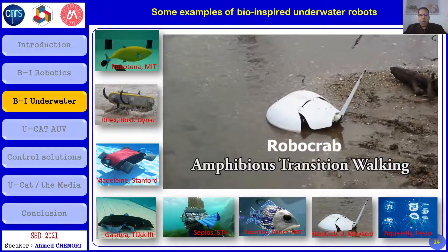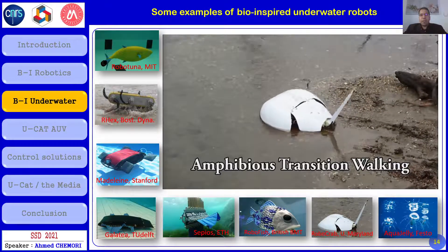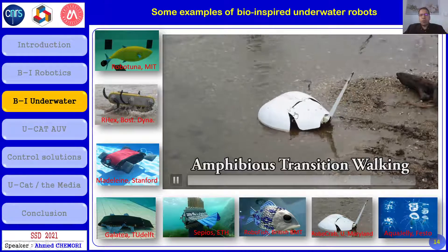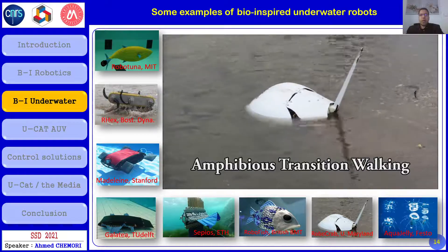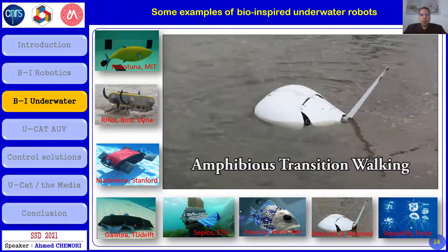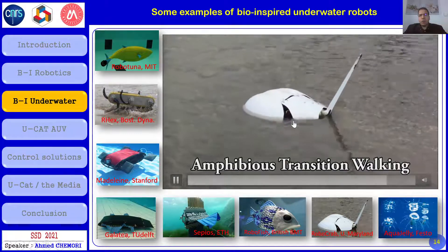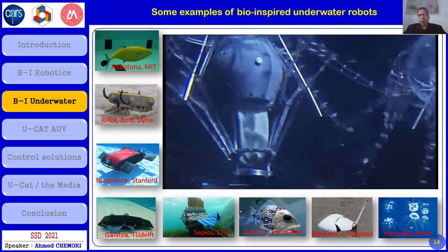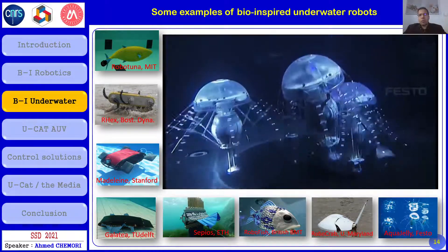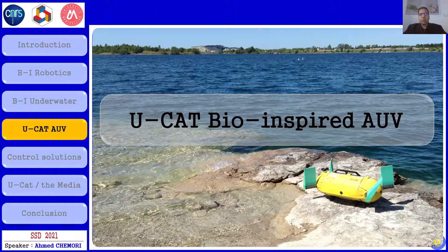RoboCrab, designed at the University of Maryland, can perform different motions — moving from dry land to underwater. The last example is the Aquagile robot, a Medusa-inspired bio-inspired underwater robot. Let me now introduce our vehicle, UCAT.